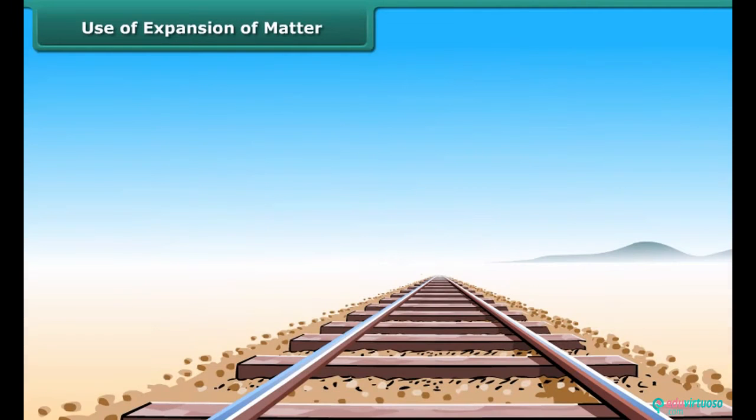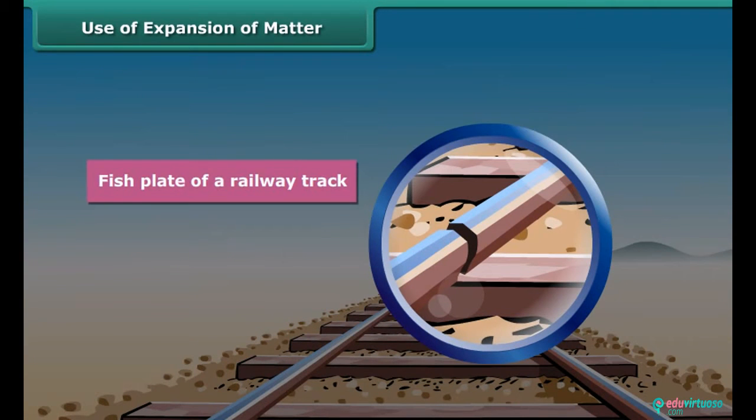A small gap is left between the rails of a railway track where the two rails are joined with the help of a fish plate. The gap is left to allow space for the expansion of rails in summer.